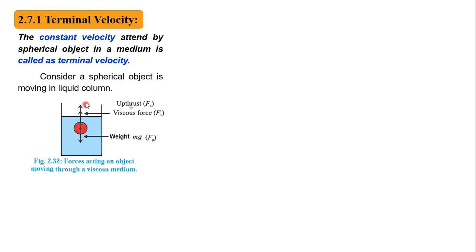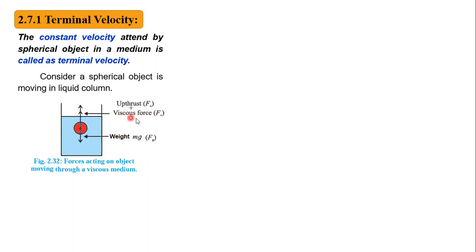The spherical object is moving in the liquid column. We have to consider the forces acting on this spherical object. The downward force, as you can see in the diagram, is the weight. The upward forces are the upthrush force exerted by the liquid and the viscous force.